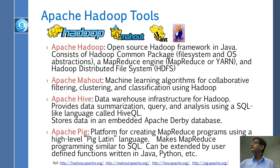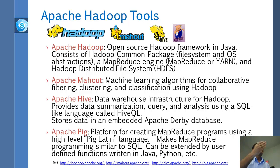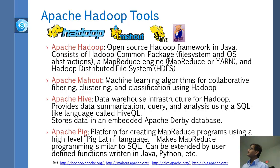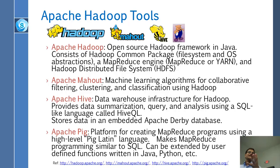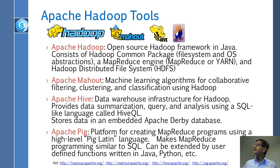Apache Mahout — 'mahout' is an Indian word meaning elephant trainer, the little person sitting on top of the elephant. Mahout is a machine learning package providing algorithms for collaborative filtering, clustering, and classification. Hive is the data warehouse infrastructure — data warehouses store and supply large datasets. With Hive, you can get data summaries, run queries, and do analysis using a SQL-like language called HiveQL.